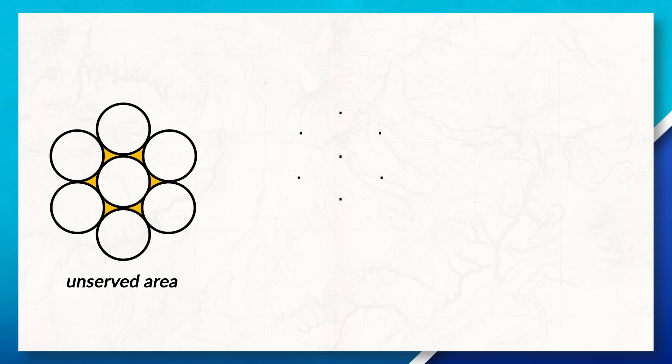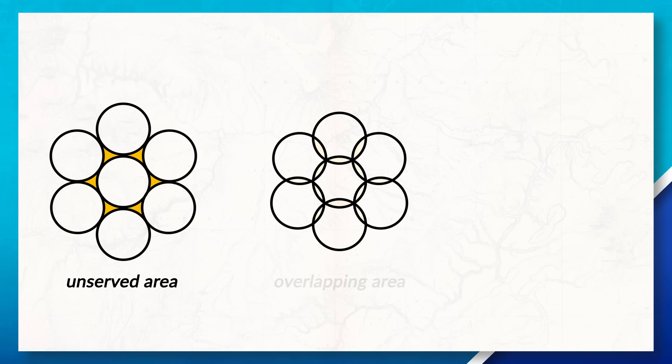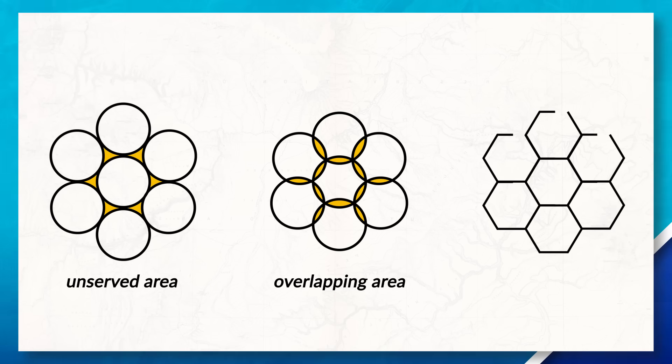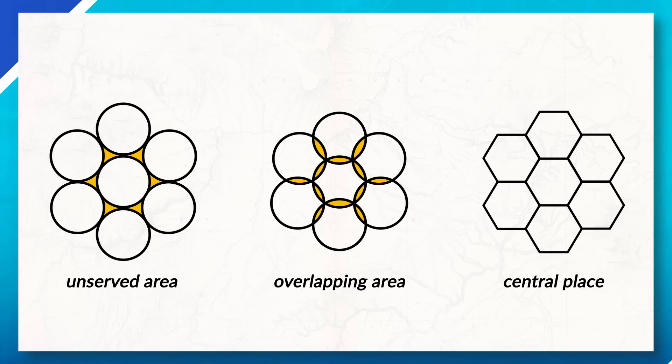Originally the model used circles however the problem with circles was that when put near each other they would not cover all of the land. This is problematic because it would mean that there are areas which are not served by any service, which is not the case in the real world. Now in order to fully understand the model, you also have to be familiar with the concept of threshold and range.